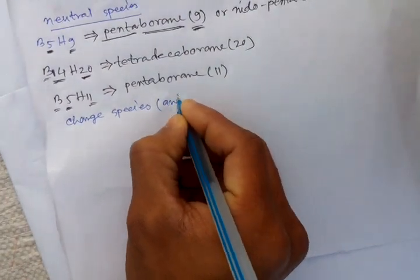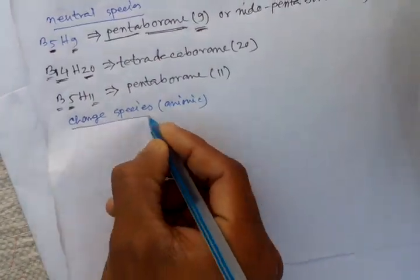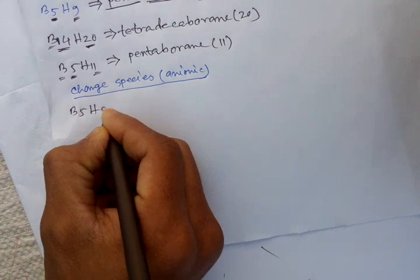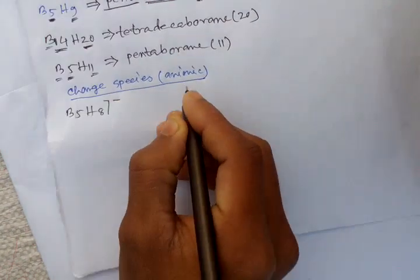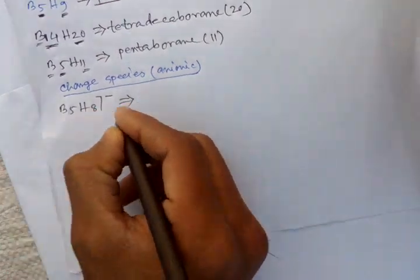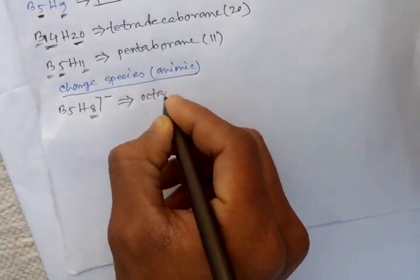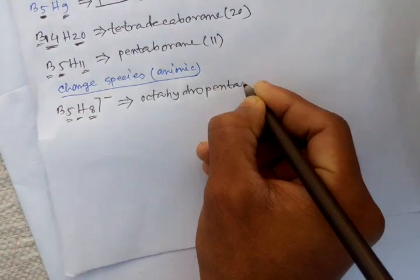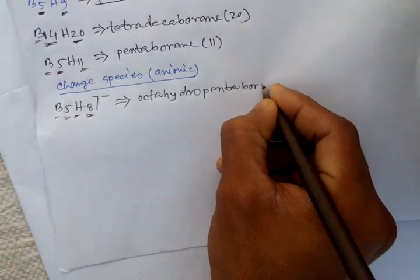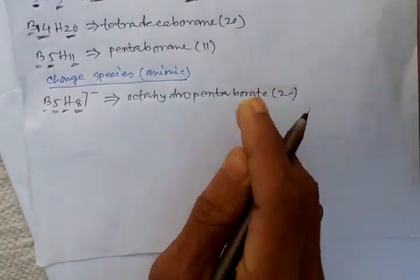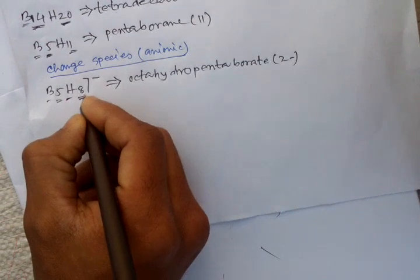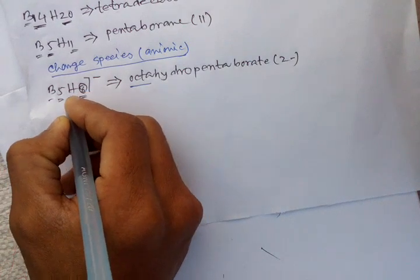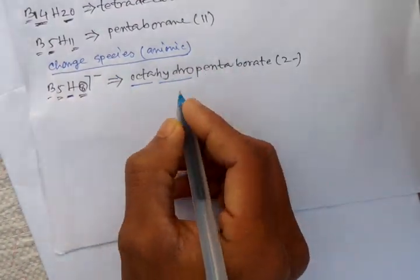Basically anionic, anionic charged species. As an example, B5H8 minus. Hydro indicates the hydrogen atoms, so we have B5 and the number of hydrogen atoms with the hydro prefix.